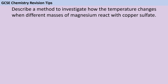When you're writing a method for one of the required practicals, or in fact for any practical activity, it's a really good idea before you get started to explicitly identify what your 3 variables are. In order to get into level 3 and get 5 or 6 marks, you need to write a method that will produce valid data. Your method won't produce valid data unless you have changed your independent variable, measured your dependent variable, and controlled your control variables, keeping them the same.